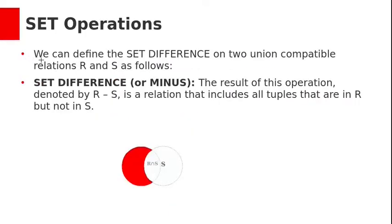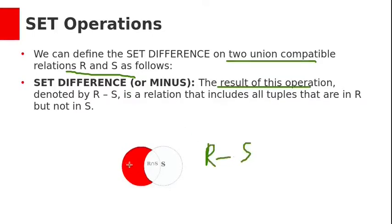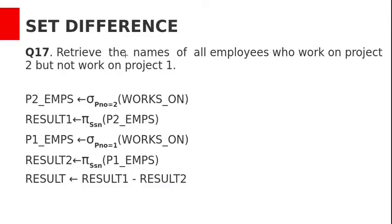Set difference. We can define set difference on two union compatible relations R and S. The result of this operation, denoted by R minus S, is a relation that includes all tuples in relation R but not in relation S.